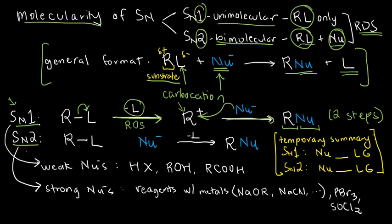For SN2, it's different. There is only one step, actually. And that means this is also automatically the rate-determining step, which involves both the RL and the Nu. And in SN2, in one entire step, the nucleophile will come to the substrate, and the leaving group will simultaneously go out. Very quick. Just one step.